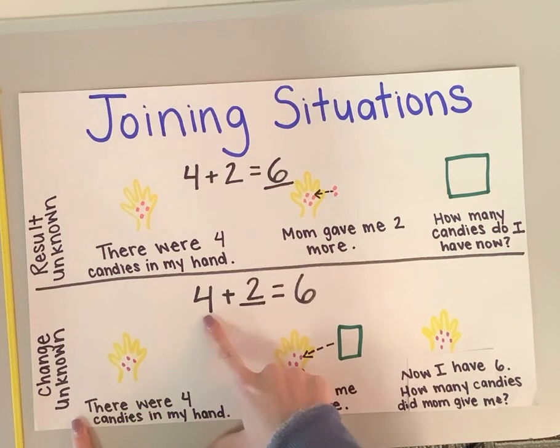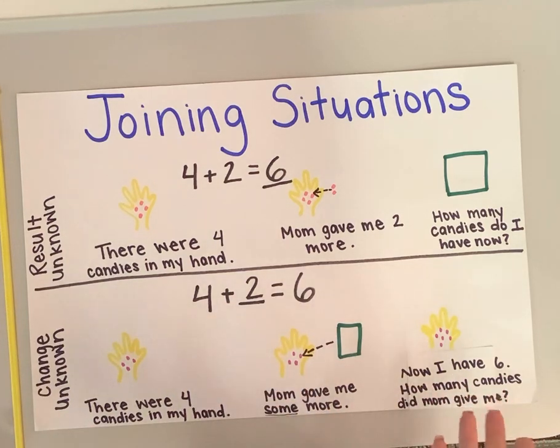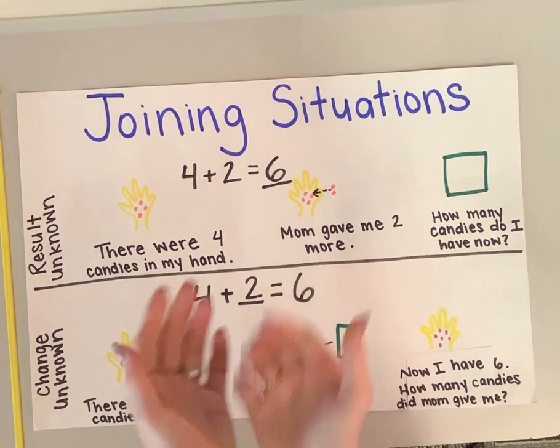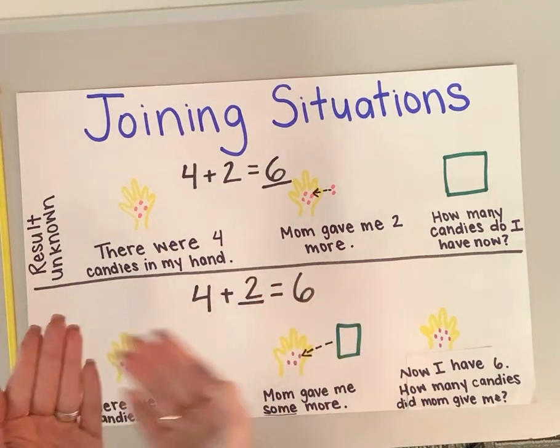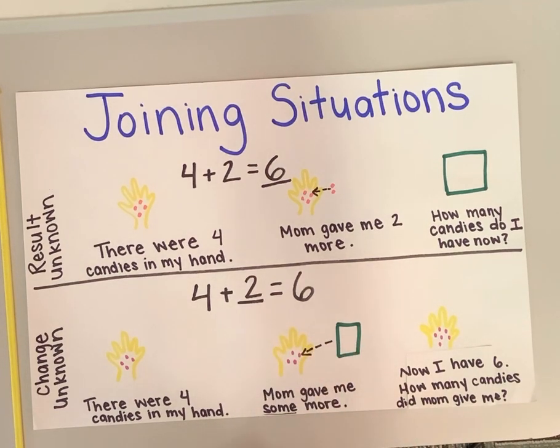Which means if we start with a number and something is added to it, but we don't know how much is added, we're given a new number. This time, if I have four candies in my hand and mom gave me some more, but I don't know how many more she's adding. Now I have six candies.